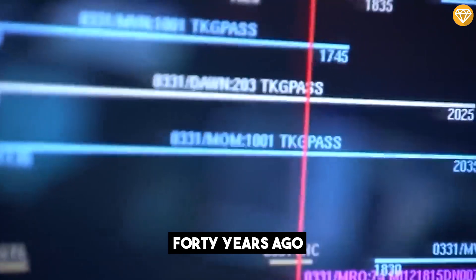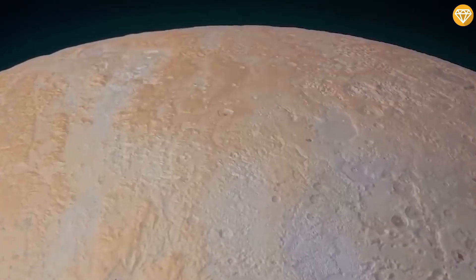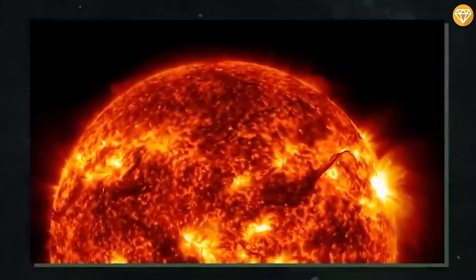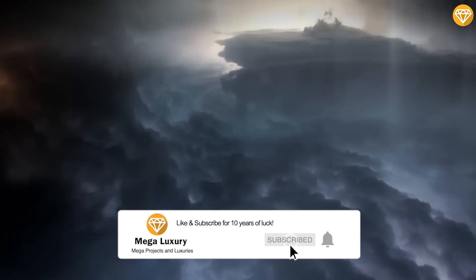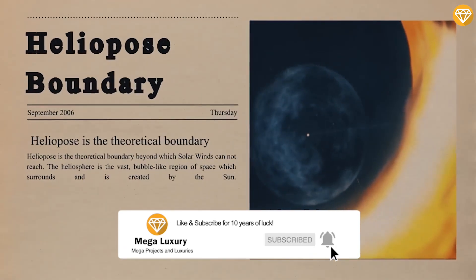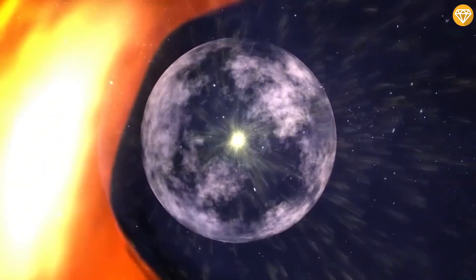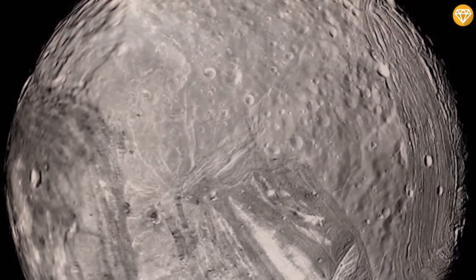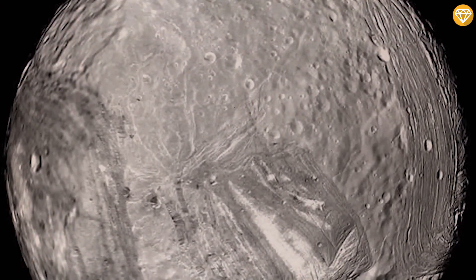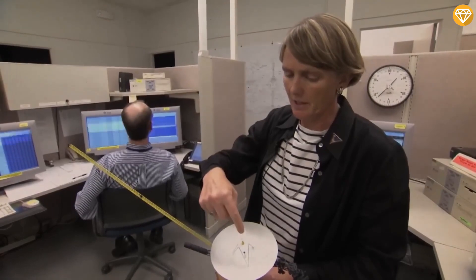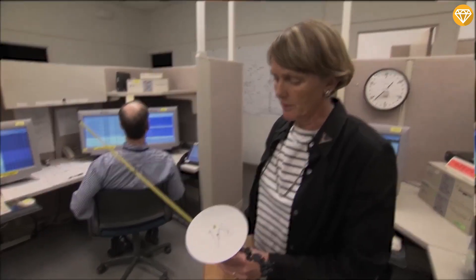Since their launches over 40 years ago, the two have discovered ice-covered moons, deep space volcanoes, and evidence of water on other planets. Jupiter's moon Io has a volcano with 10 times more activity than the volcanic activity on Earth. Jupiter's other moon Europa has a cracked surface, leading scientists to believe that there was liquid water below the surface.